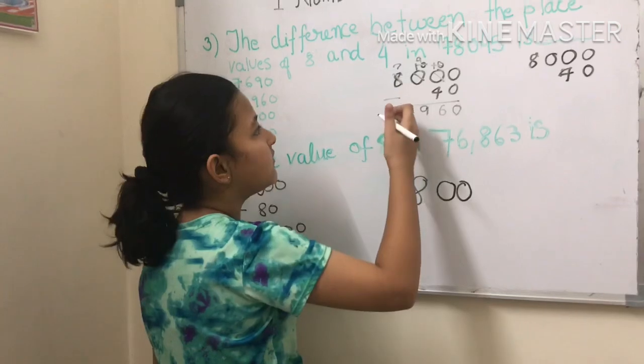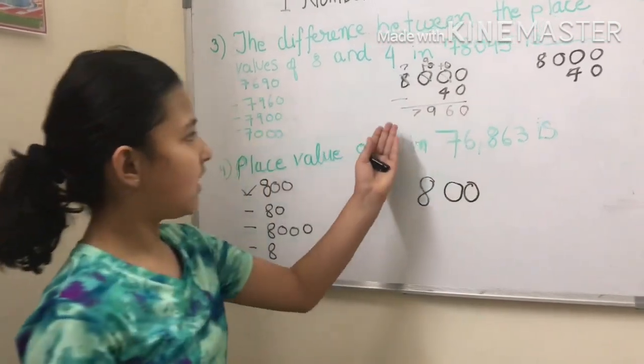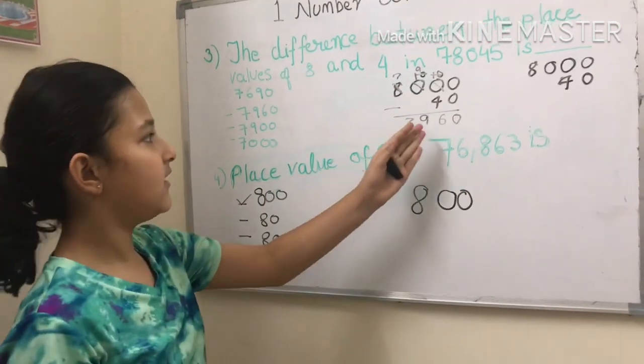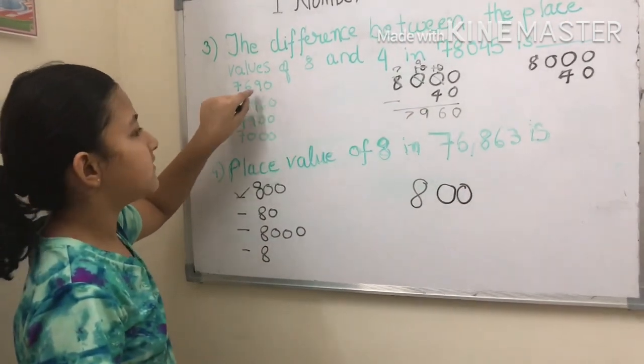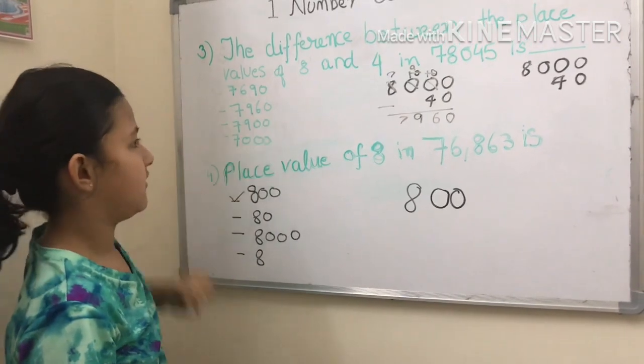Then seven minus one is nothing, will be seven. So this is our answer: seven, nine, six, zero. Seven, nine, six, zero.